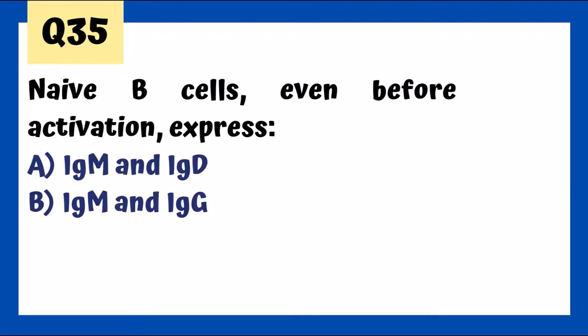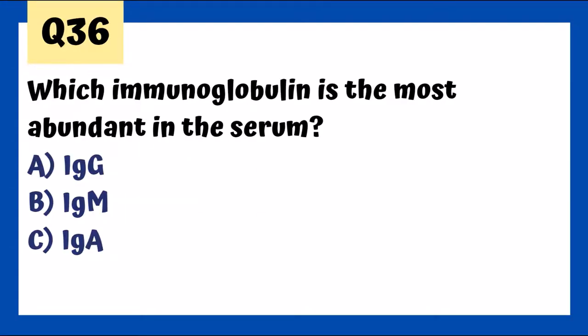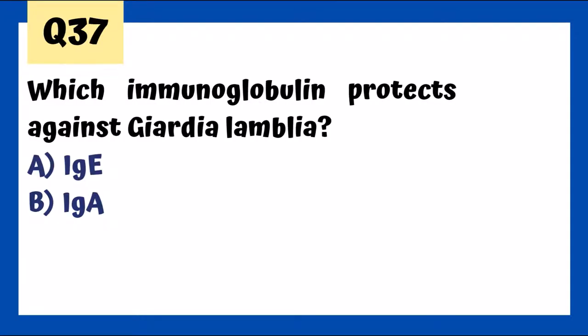Naive B-cells, even before activation, express IgM and IgD — IgM is produced first then IgD, but both are produced before B-cell activation. IgG is the most abundant immunoglobulin in the serum, making up about 80% of immunoglobulin in the blood. IgA protects against Giardia, protecting mucosal surfaces — in selective IgA deficiency, we see increased risk of Giardia lamblia infection.